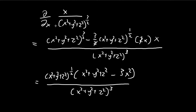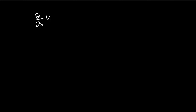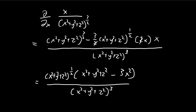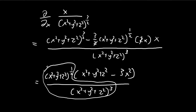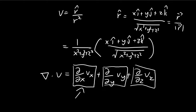By symmetry, something similar is going to happen for the y and z components. The only thing that differs is that for the y component, instead of minus 3x squared we're going to have minus 3y squared, and for the z component it's going to be minus 3z squared. These terms appear in all three components.